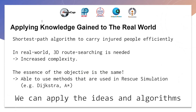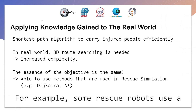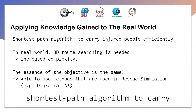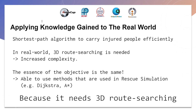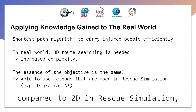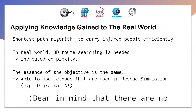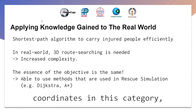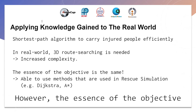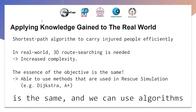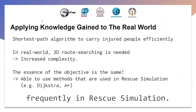We can apply the ideas and algorithms used in rescue simulation to the real world. For example, some rescue robots use a shortest path algorithm to carry injured people efficiently. Because it requires 3D route searching compared to the 2D used in rescue simulation, it is more complex. There are no coordinates in this category so the details differ, but the essence of the objective is the same, and we can use algorithms such as Dijkstra and A-star that are applied frequently in rescue simulation.